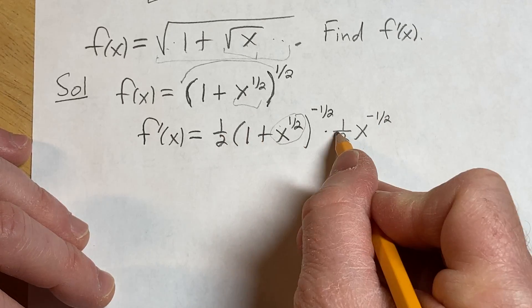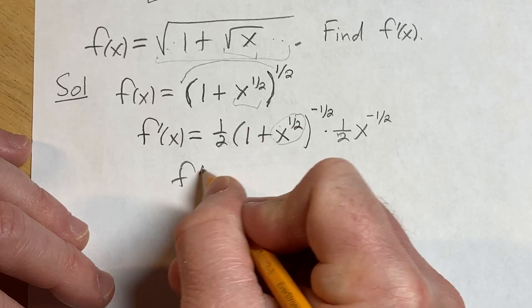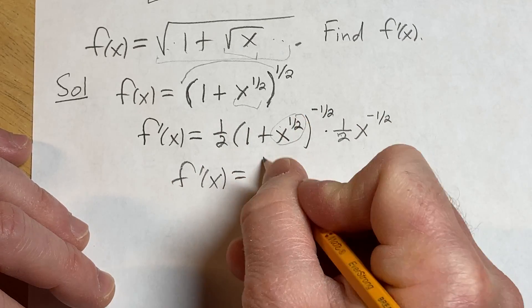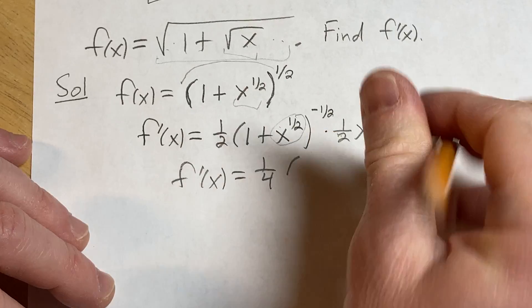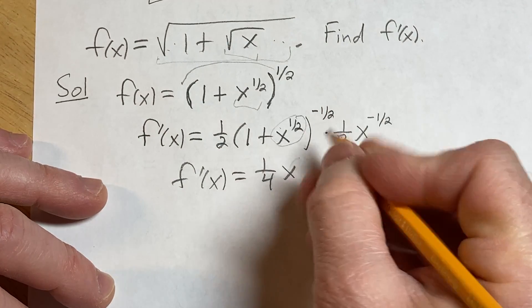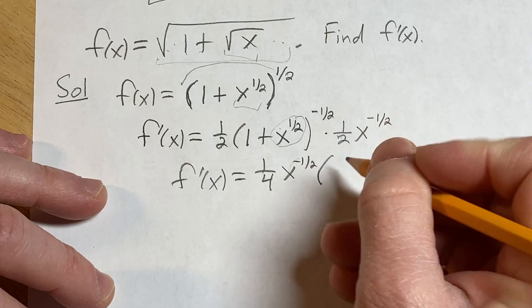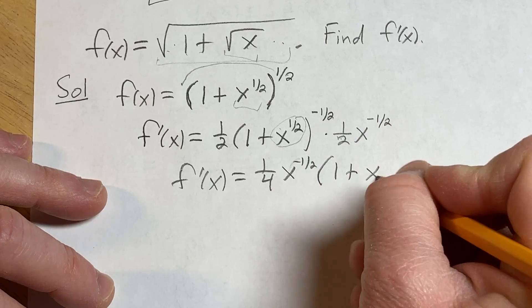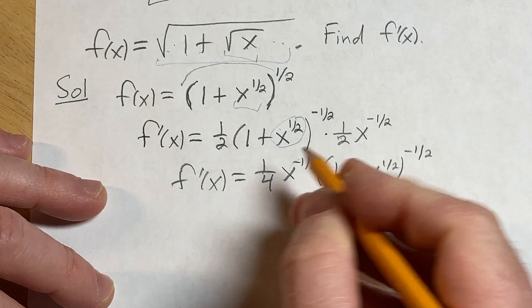Now you can multiply, 1 half times 1 half is 1 fourth. So f prime of x is going to be 1 fourth. And let me just go ahead and put that x to the negative 1 half in the front as well. And then we have 1 plus x to the 1 half to the negative 1 half.